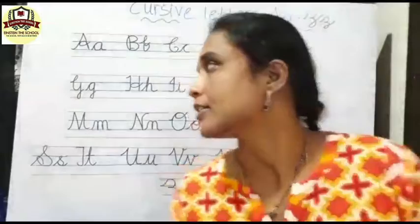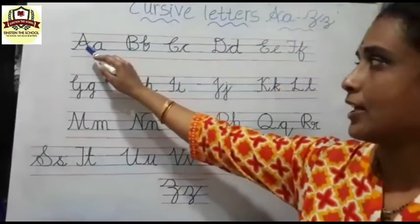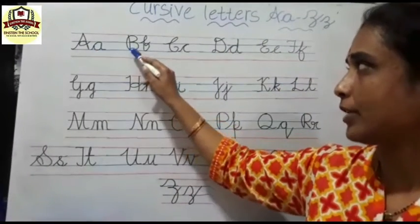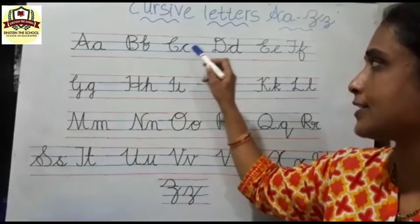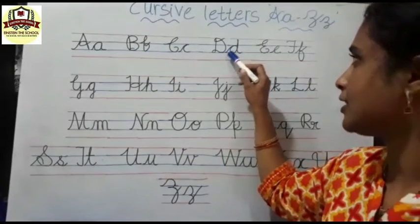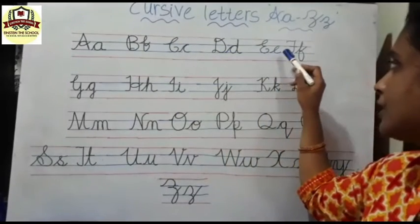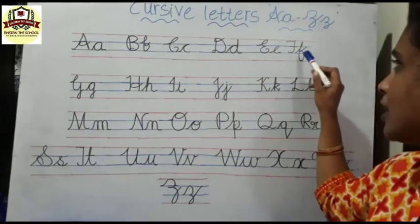Now see here: capital A, small a, capital B, small b, capital C, small c, capital D, small d, capital E, small e, capital F.